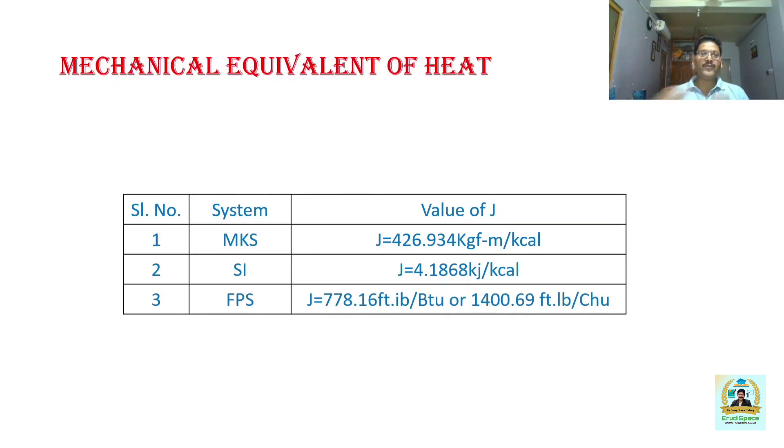For your reference I have taken all the three common unit systems: MKS system, SI system and FPS system. For MKS system the value of J is 426.934 kilogram-force meter per kilocalorie. For SI system J is 4.1868 kilojoule per kilocalorie. And for FPS system J is 778.16 foot-pound per BTU or 1400.69 foot-pound per centigrade heat unit.